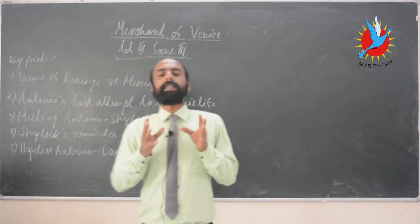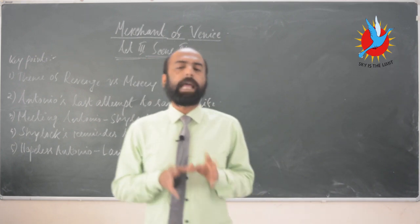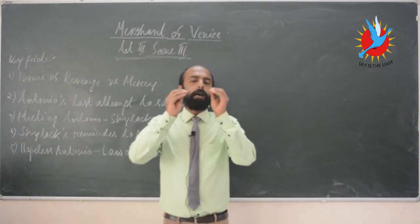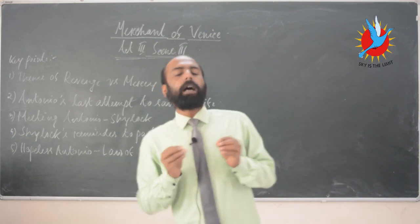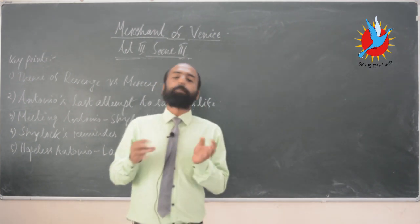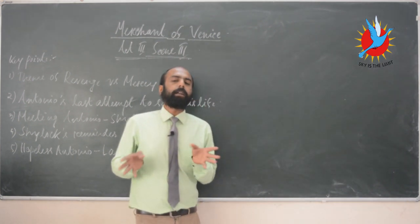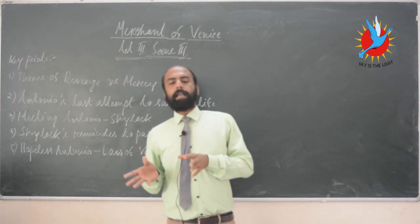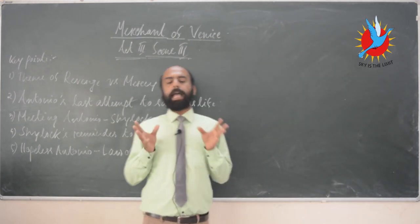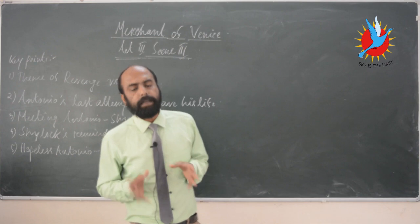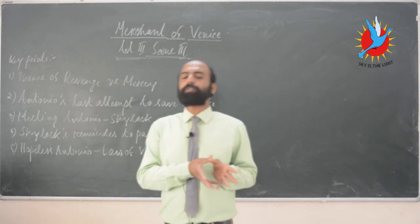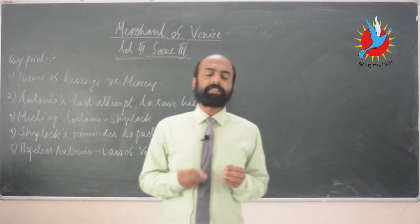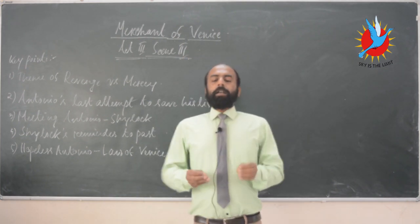Shylock has already sent Antonio behind bars. There is very limited time left for Antonio. As we are aware, the conditions of the bond were: three months' time to pay three thousand ducats, and in case Antonio is unable to pay, he would have to give away one pound of flesh cut from his chest.